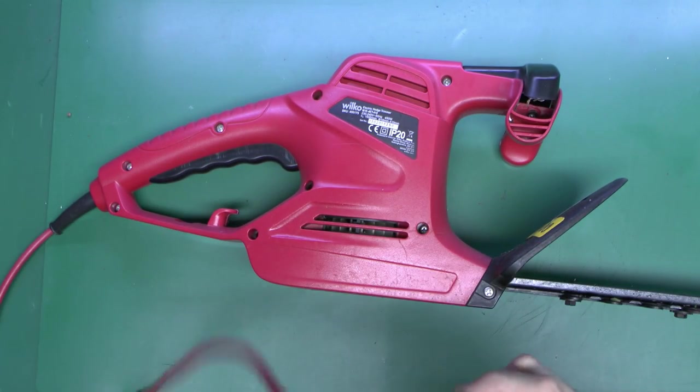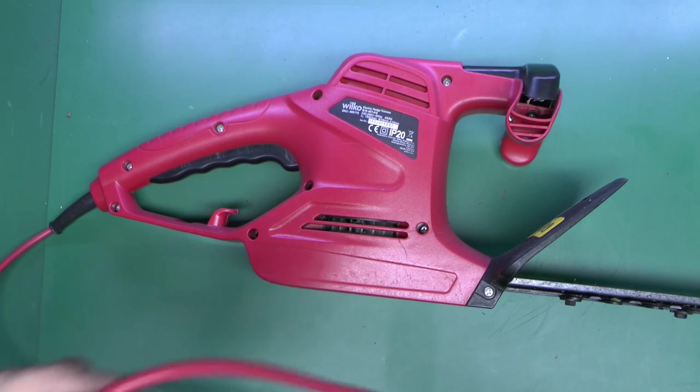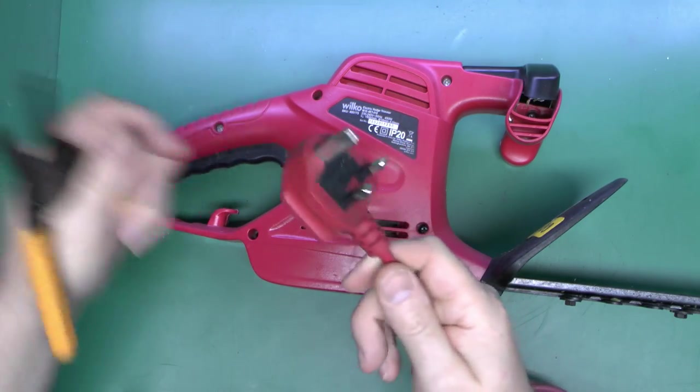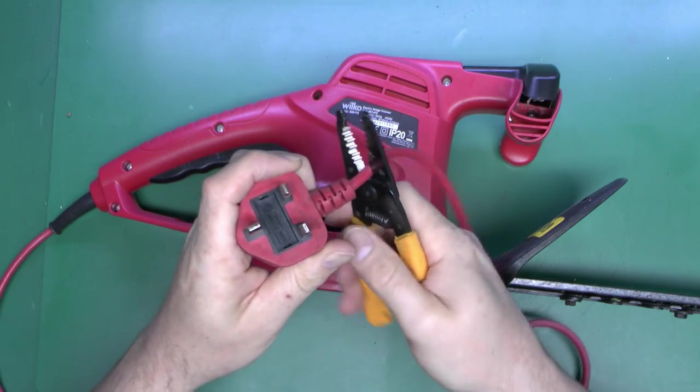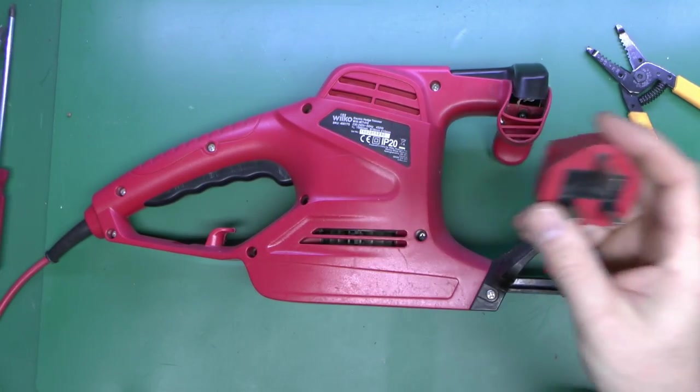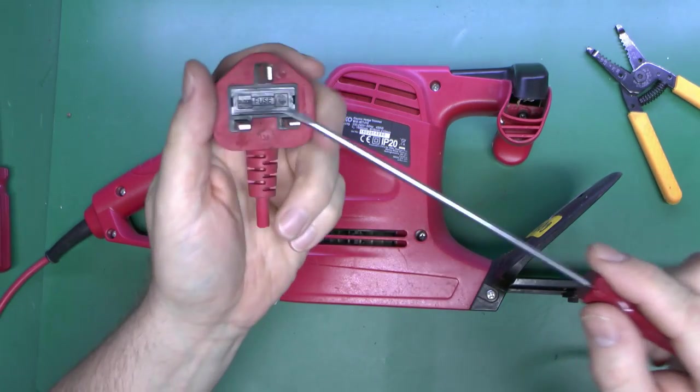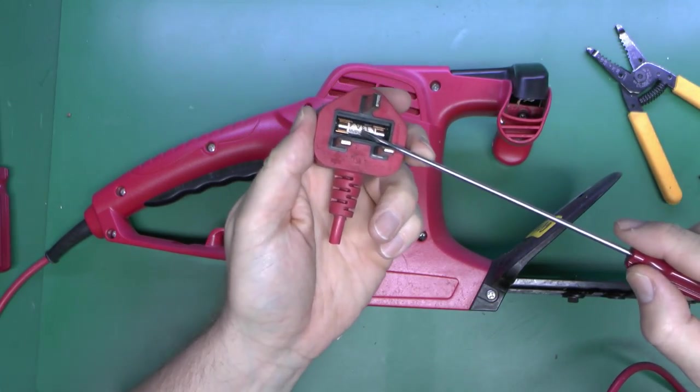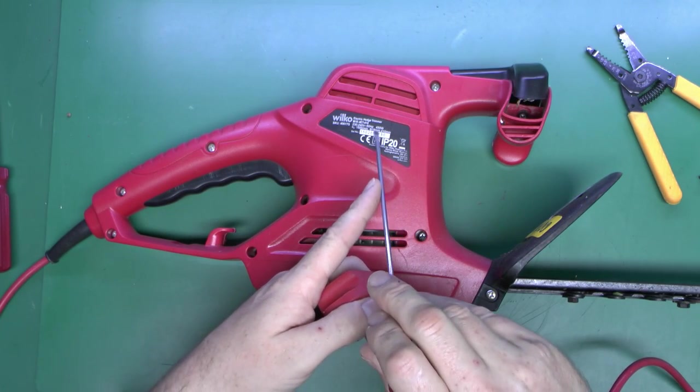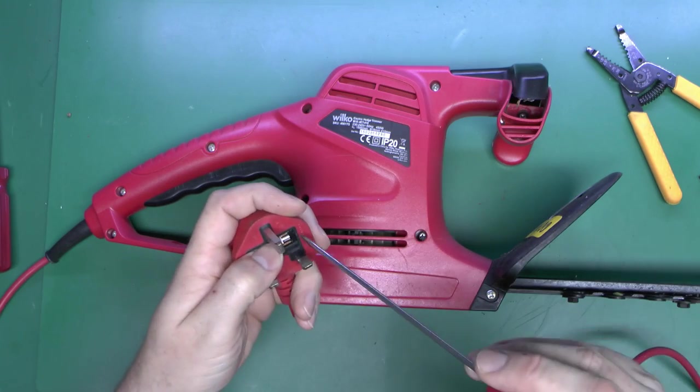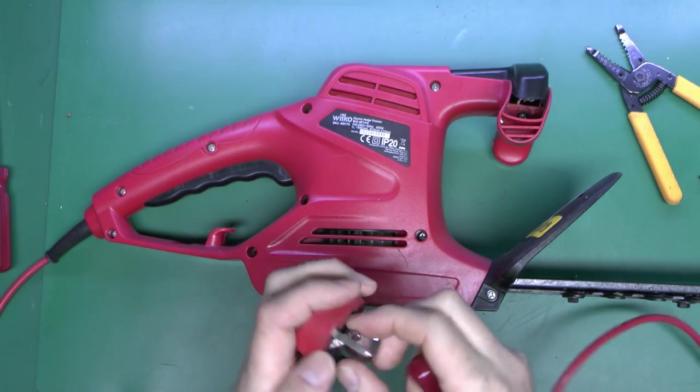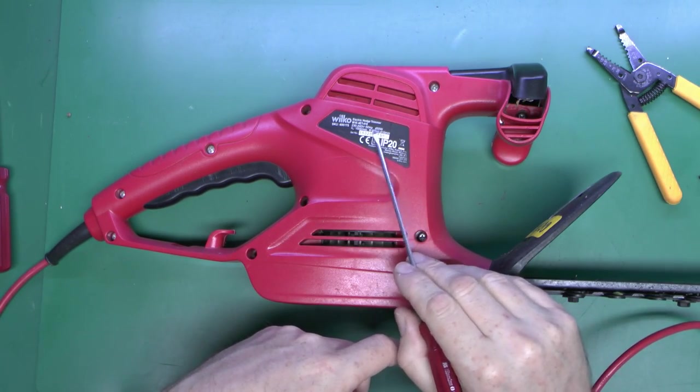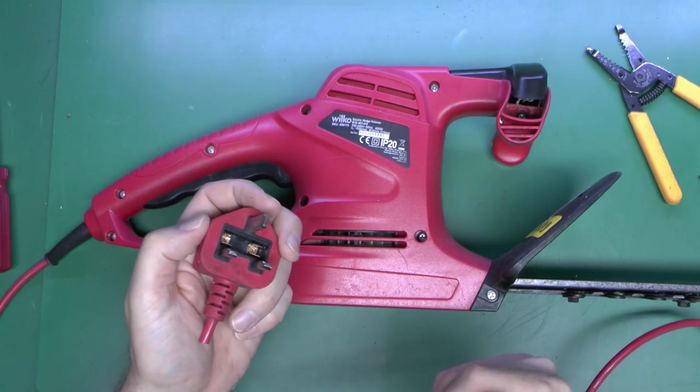The plug here we need to get rid of first, one of these molded-on jobs, so we'll just cut off the actual wire there and take the fuse out of it. Inside there we've got a 13 amp fuse, god knows why, because this is only a 450 watt item. A 3 amp fuse would do quite perfectly well, as that would be good for up to 700 odd watts.